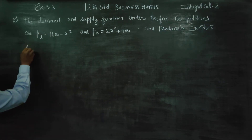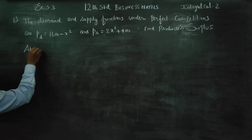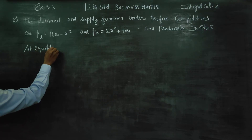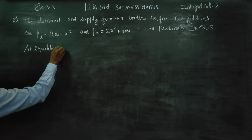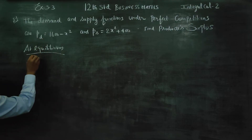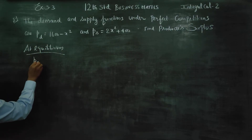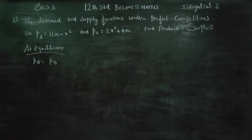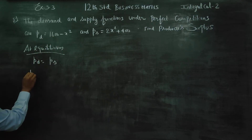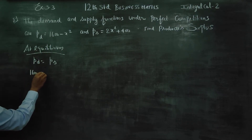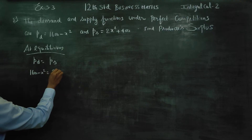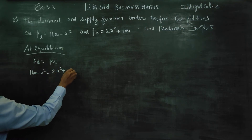At equilibrium under perfect competition, PD equals PS. The demand function is PD = 1060 minus x squared, and the supply function is PS = 2x squared plus 400.